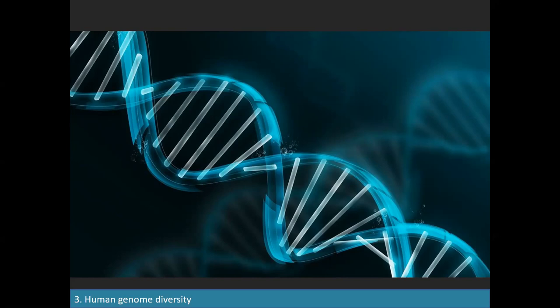DNA has also been described as a text — a very good metaphor. Just as a text in English is made of 26 letters plus spaces and punctuation, DNA is composed of four letters — four molecules repeated in long chains called chromosomes. These four molecules are called A, C, G, and T. So we understand the alphabet of DNA. We also understand the lexicon — the vocabulary — of DNA.